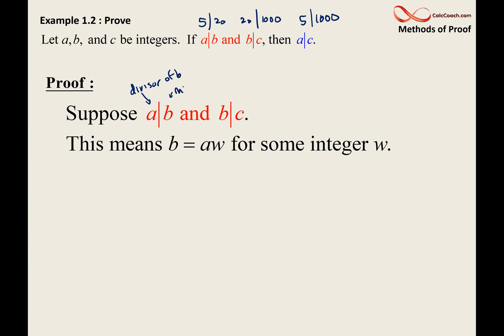All right. Great. And so, you can write it then as b = aw for some integer w. Since we're supposing this is true. And then the other one.